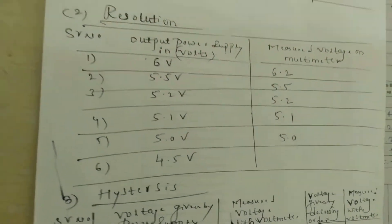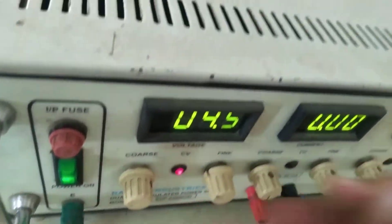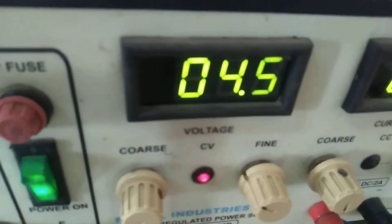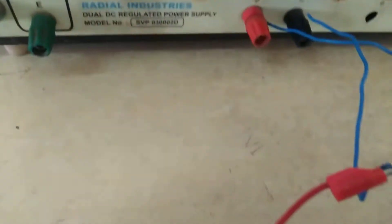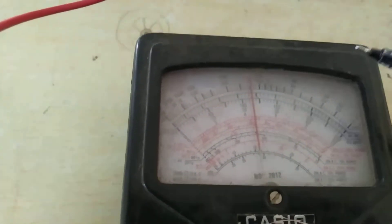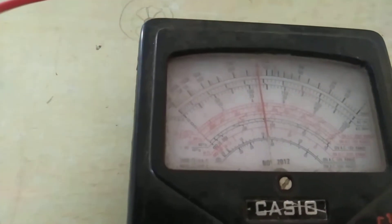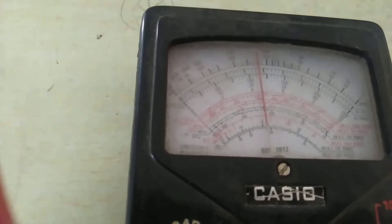Next, I will give 4.5 volts. The multimeter will provide readings around 4, 4.2, 4.4 — it will cross towards 4.4. You can write it here as 4.5. This completes your second table for resolution.